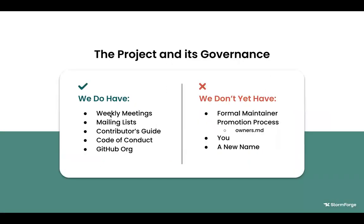That brings us to the project itself — what we have and what we don't have. We have weekly meetings to talk about these things: what do people want, what is the community going to bring in? We have a mailing list, a contributor's guide, a code of conduct, a GitHub org, and all the things you need to manage a project. What we don't have yet is significant contribution outside of StormForge and we want to change that. We don't have a formal maintainer process because, quite frankly, we don't have you — all of you who are here on this call. We want you to get involved in this project. We're trying to make this a community project that is not owned by any one company and we want everyone to help drive it forward.